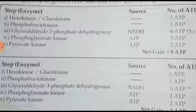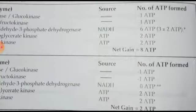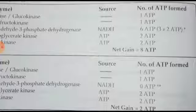ATP is produced in the synthetic phase at three steps: the glyceraldehyde-3-phosphate dehydrogenase step (producing NADH), the phosphoglycerate kinase step (producing ATP), and the pyruvate kinase step (producing ATP). One NADH is equivalent to 3 ATPs — an easy way to remember: apart from the thumb, the remaining fingers show three digits, meaning one NADH equals 3 ATPs.